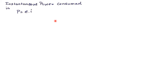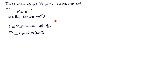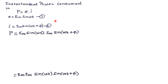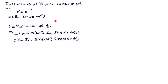The instantaneous power consumed by the circuit is P = E × I. From equations 1 and 2, E = EM sin(ωt) and I = IM sin(ωt + φ). Substituting into P: P = EM sin(ωt) × IM sin(ωt + φ), which can be rewritten as P = EM IM sin(ωt) sin(ωt + φ). Using the trigonometric identity sin(A)sin(B) = ½[cos(A − B) − cos(A + B)].